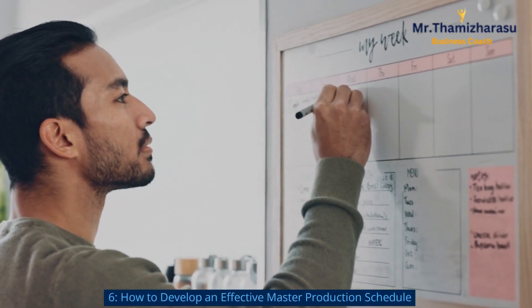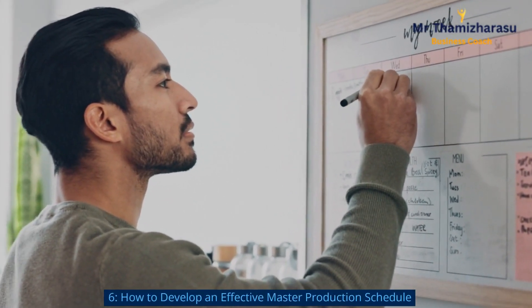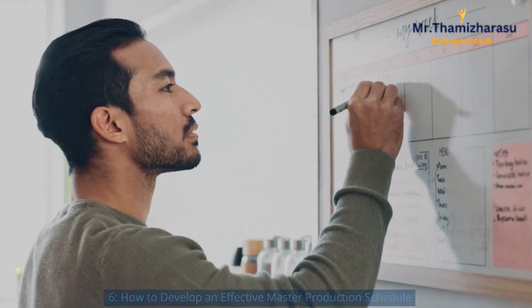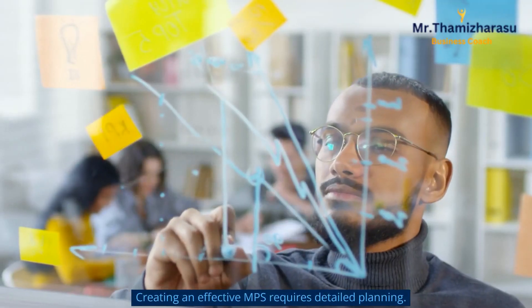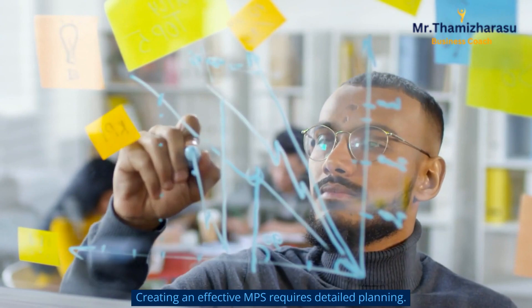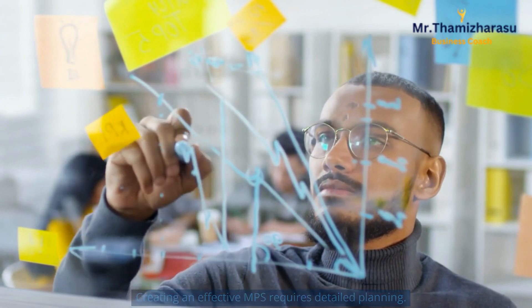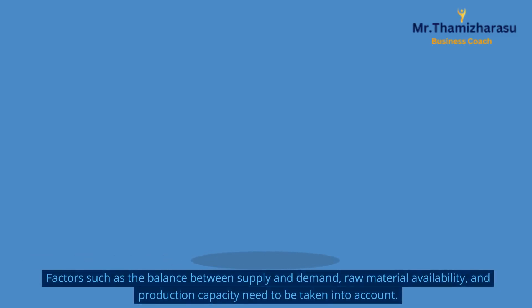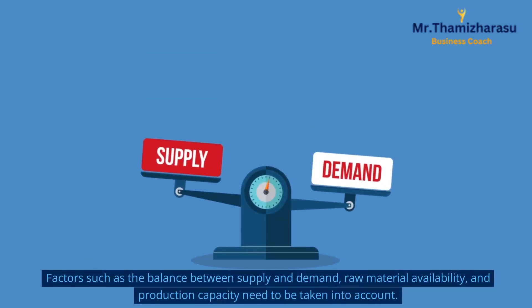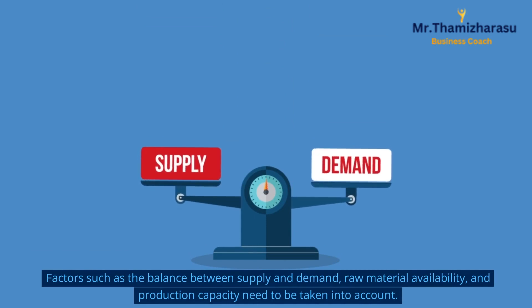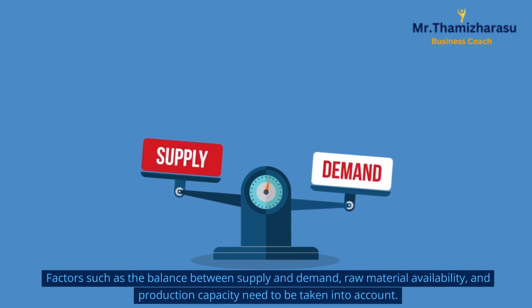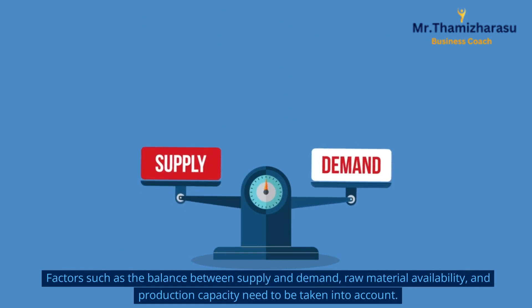How to Develop an Effective Master Production Schedule: creating an effective MPS requires detailed planning. Factors such as the balance between supply and demand, raw material availability, and production capacity need to be taken into account.